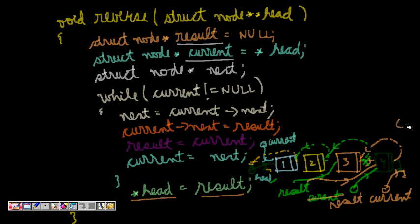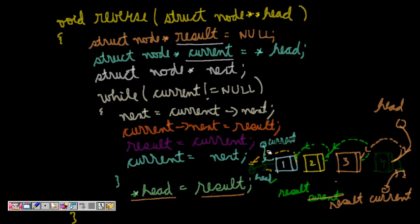We come out of the loop and set head equal to result. So now head points to node four. All links are reversed: four → three → two → one → null. The redundant old forward pointers are removed. This is how reversing a linked list works. I hope you understand it.